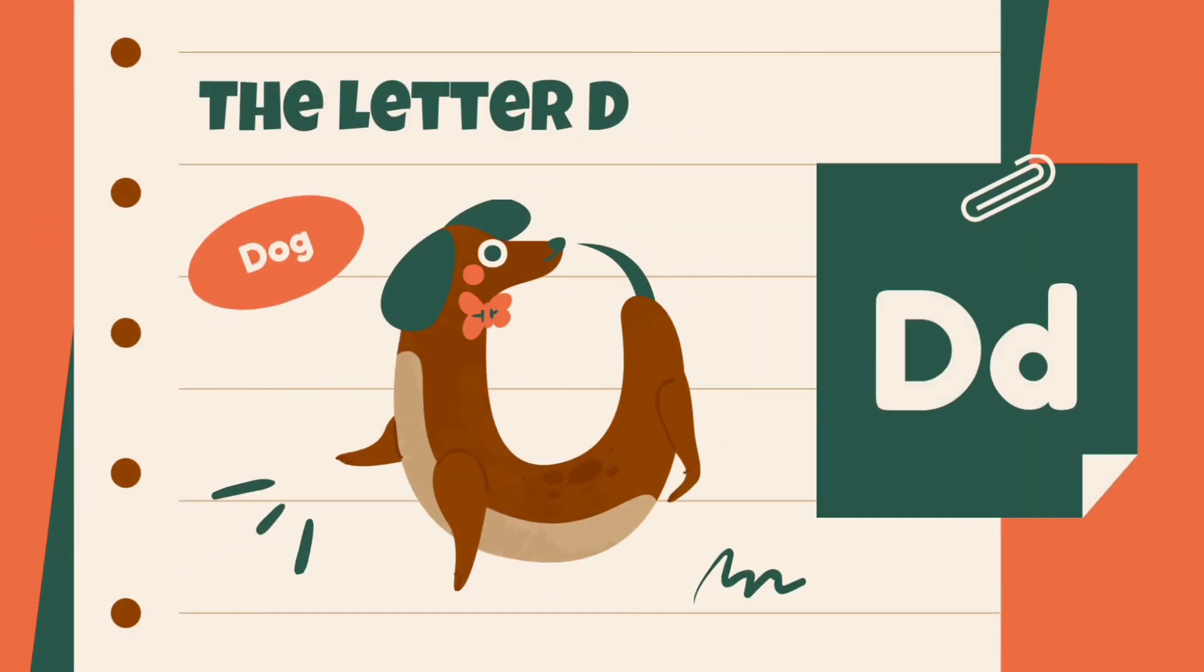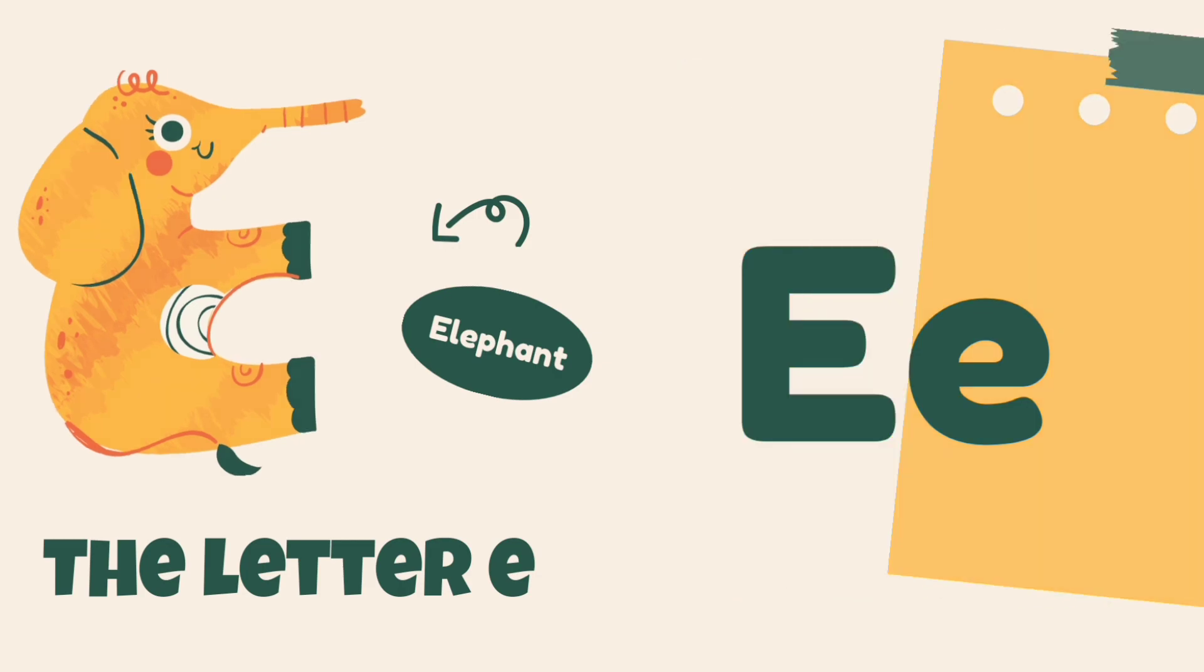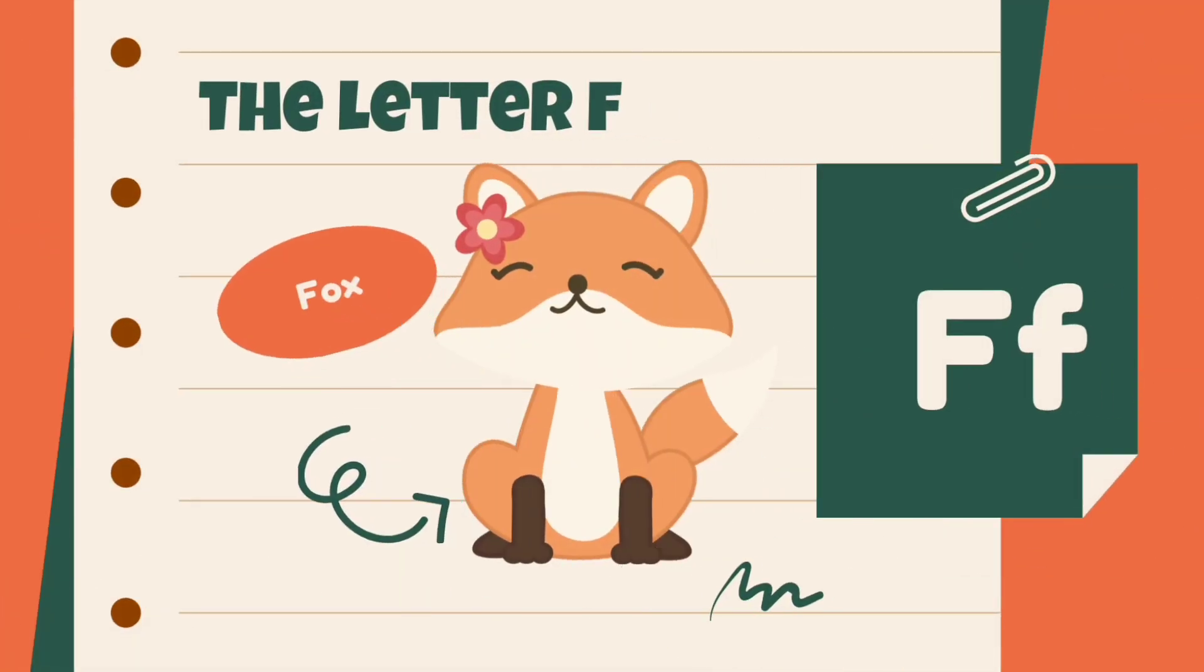D is for dog, dog. E is for elephant, elephant. F is for fox, fox.